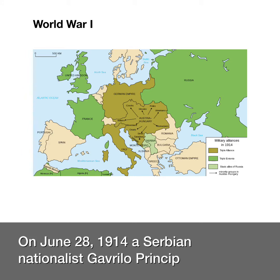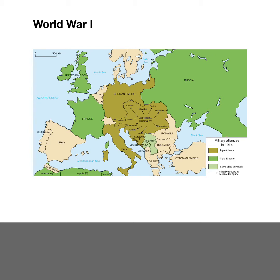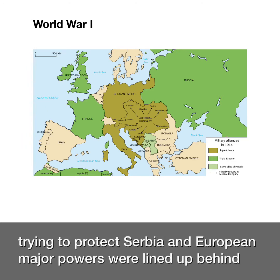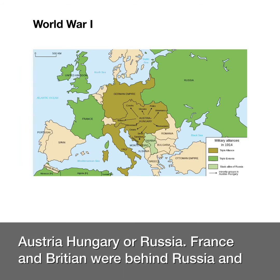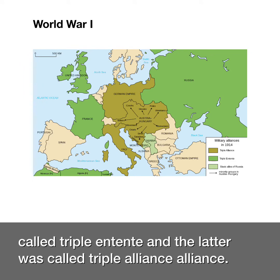a Serbian nationalist Gavrilo Princip assassinated Austria-Hungary's Prince Franz Ferdinand in Sarajevo. Austria-Hungary was determined to retaliate against Serbia, and Russians tried to protect Serbia. European major powers lined up behind Austria-Hungary or Russia. France and Britain were behind Russia, while Germany and Italy were behind Austria-Hungary — the former called the Triple Entente and the latter the Triple Alliance.